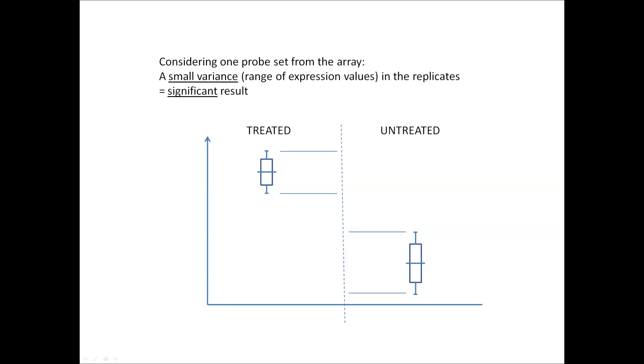In case you are unfamiliar with this type of graph, it is called a box plot. It gives details about the spread of data. In this case, the expression values for a particular probe set in the six replicates. The horizontal bar shows the median value, and the thick vertical bars above and below show the upper and lower quartiles. The whiskers indicate the range of values, high to low.